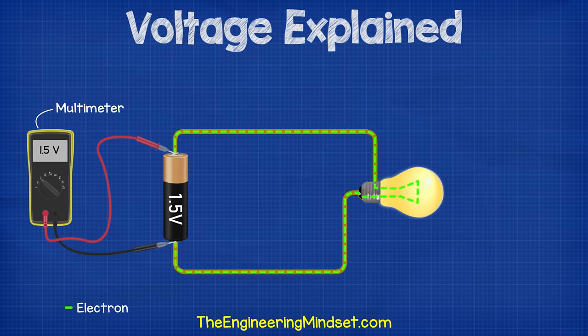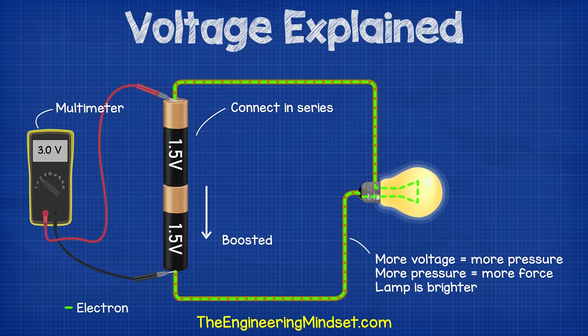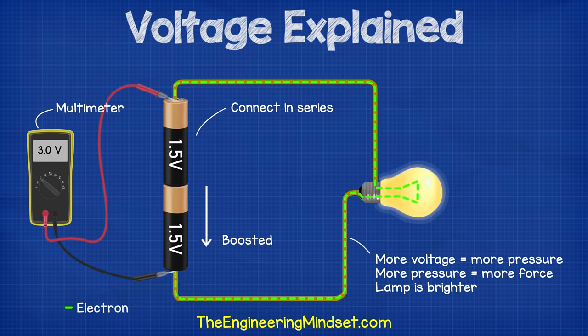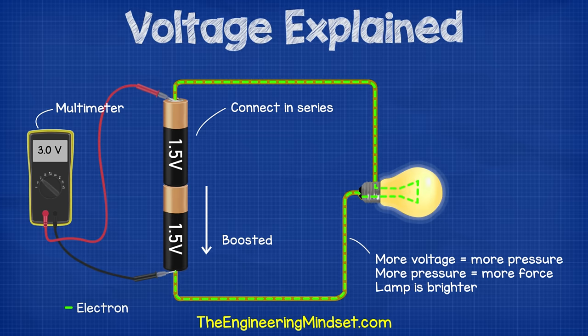For example, if we place a lamp into the circuit, then this will light up as the electrons flow through it. If we then added another battery to the circuit in series, then the electrons will effectively be boosted by the second battery because they can only flow along this path and there is more energy being added. This will combine the voltages so we get three volts. More volts equals more pressure, which means more pushing force. That will mean more electrons will flow and the lamp will glow brighter.